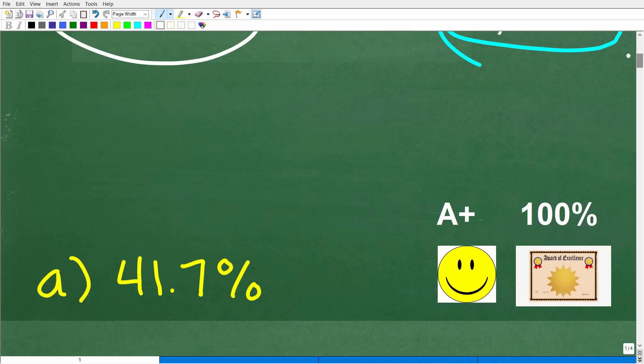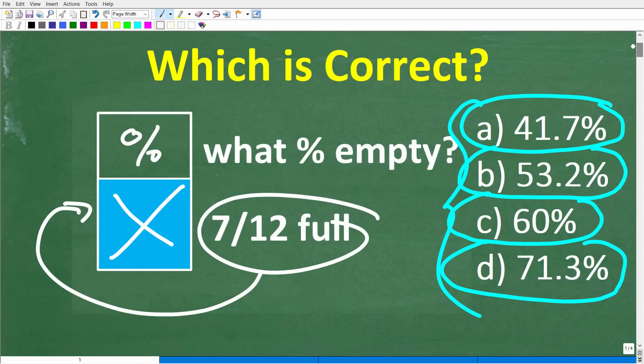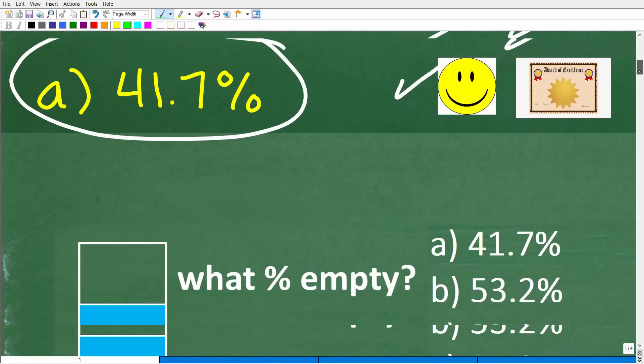The correct answer is A, approximately 41.7%. Now, if you got this right, you definitely get a happy face and a plus and 100% and a certificate of excellence for being a certified professional expert in basic fractions and percent. So you're going to have to know a thing or two about both percent and fractions. But this is not that difficult.